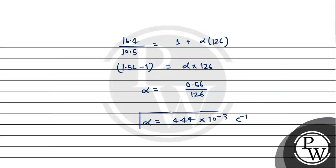So your value for temperature coefficient of resistance, the final answer is 4.44 into 10 to the power minus 3 per degree Celsius.